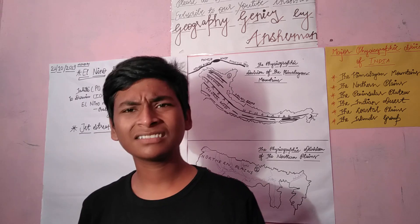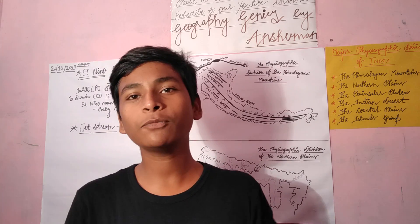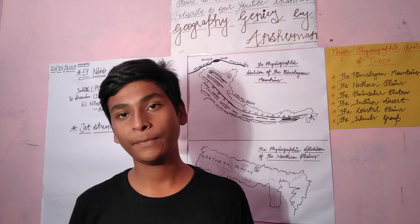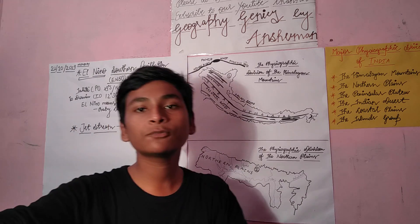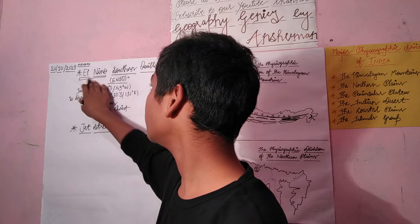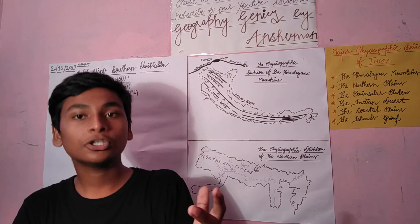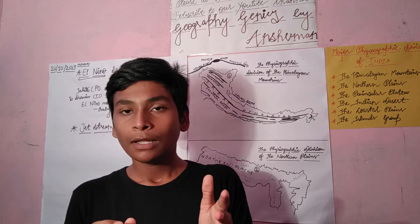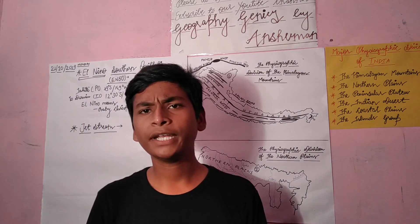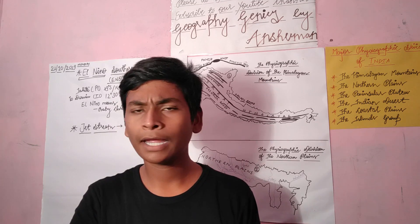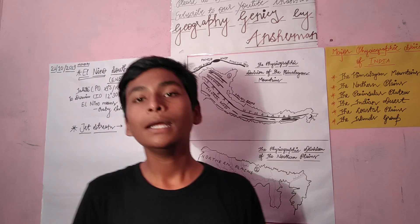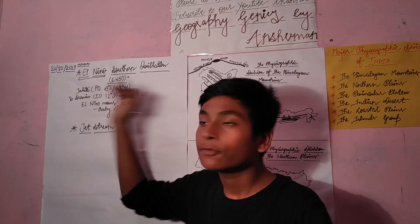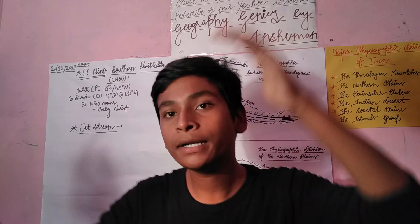You might be thinking: baby Christ? Why is baby Christ important for geography? Let me tell you what Southern Oscillation means. Southern Oscillation relates to ocean currents, which you have already studied from Class 5 and Class 6. The ocean current that is felt from the Pacific Ocean to the Indian Ocean is the key focus here.